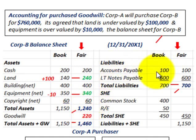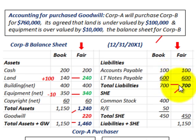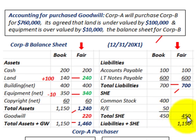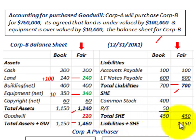For our liabilities, we only had two. Accounts payable — book and fair were the same at $100,000. Notes payable was $600,000 for both book and fair value. So total liabilities were $700,000. There was also common stock and retained earnings totaling $450,000, making total liabilities plus shareholders' equity $1,150,000, which was the same between book and fair value.